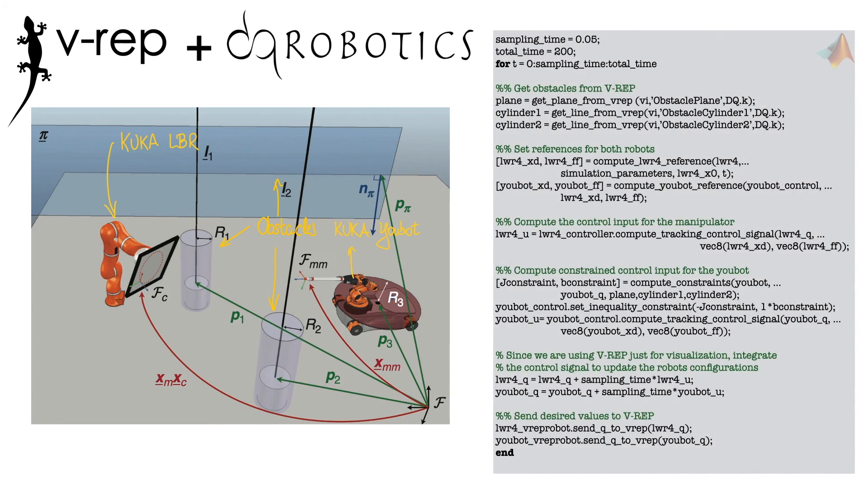The source of the main program is as simple as that. First, we define the sampling time and the total time for the simulation. There is a loop in which first we retrieve information about where the obstacles are in the workspace. Then, we set the desired end-effector trajectories. This is all the information we need to generate the control inputs.